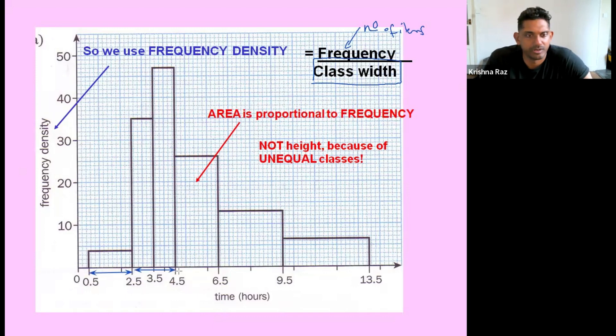So you can see here it goes from half to two and a half, two and a half to four and a half, four and a half to six and a half, six and a half to nine and a half, nine and a half to thirteen and a half. So the class widths would be two, two, two, three, and four.